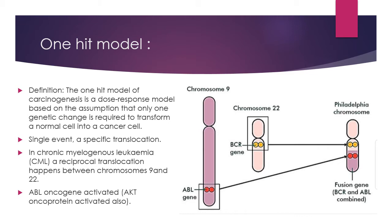The best-known example is chronic myelogenous leukemia, or CML. Here a reciprocal translocation happens between chromosome number nine and chromosome number 22. Chromosome 22 is shorter than chromosome 9. The ABL gene (Abelson gene) is present on chromosome 9, and the BCR gene is present on chromosome 22. After translocation, a fusion happens between these two chromosomes, forming a fused chromosome also known as the Philadelphia chromosome.